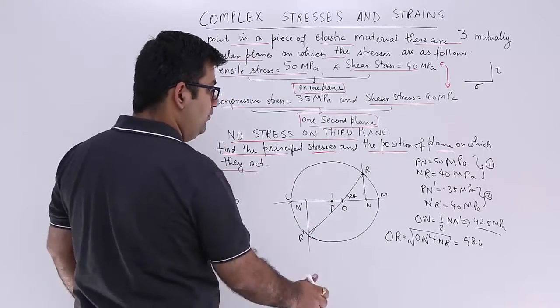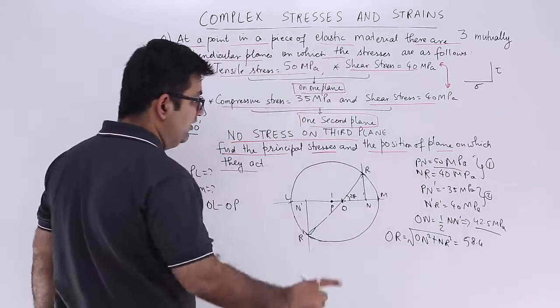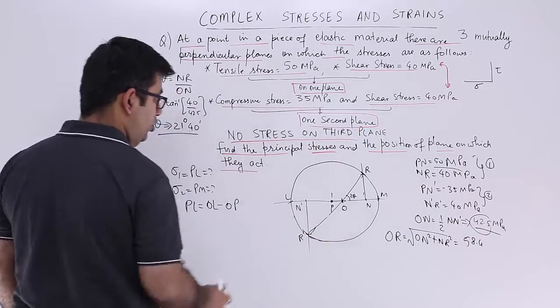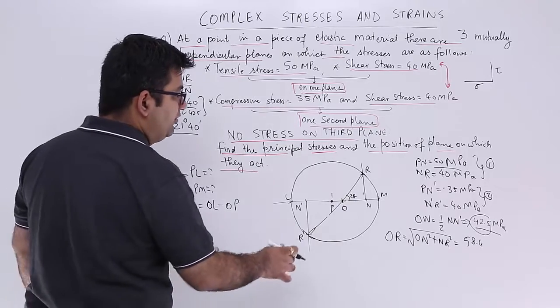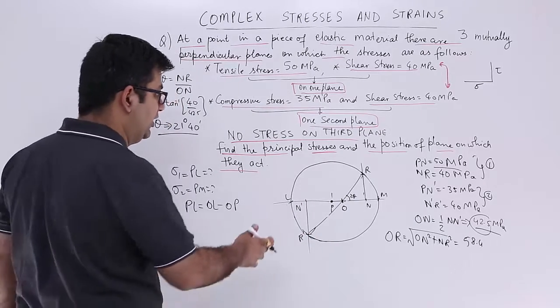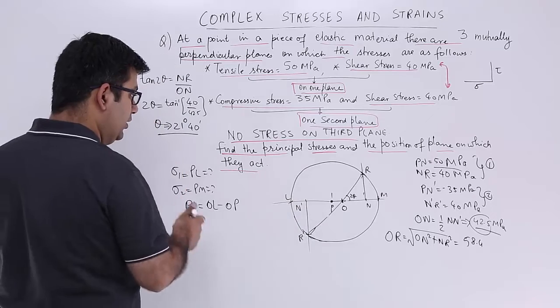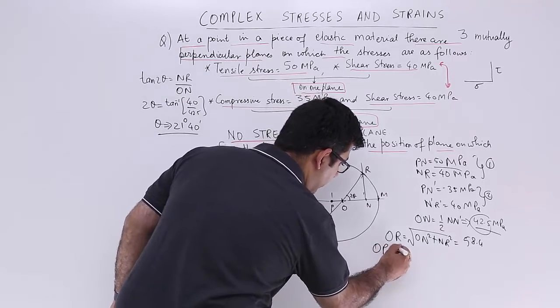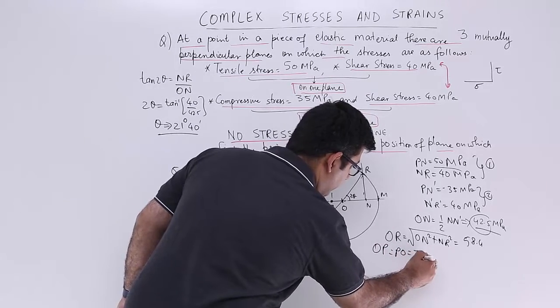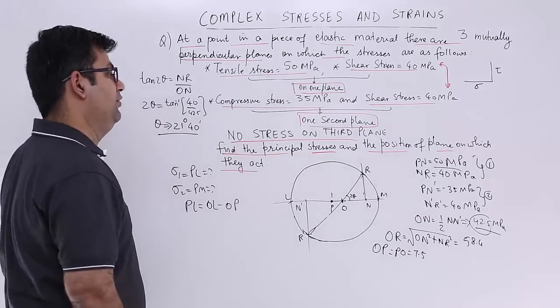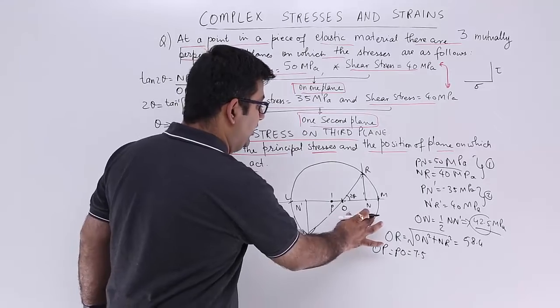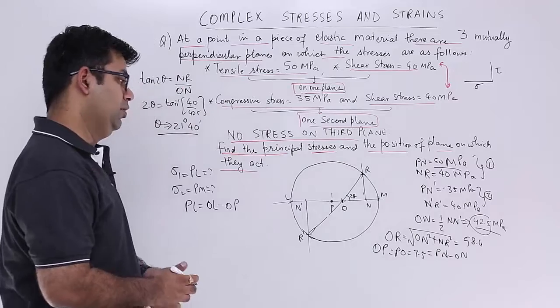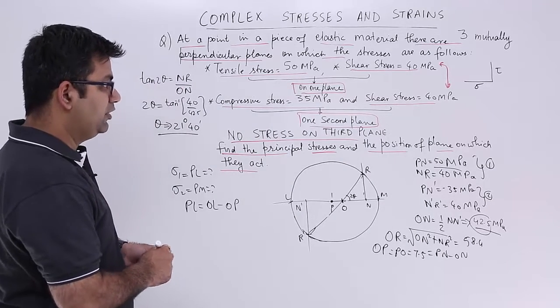OP or PO, PO is equal to PN minus ON. So we know PN, PN is 50. We have found out ON which is 42.5. I can easily calculate PO. So OP is 50 minus 42.5 that is 7.5. So PO or OP, let us write down 7.5. This is equal to PN minus ON.